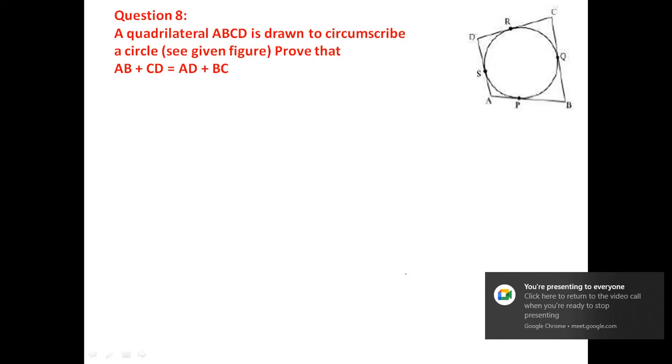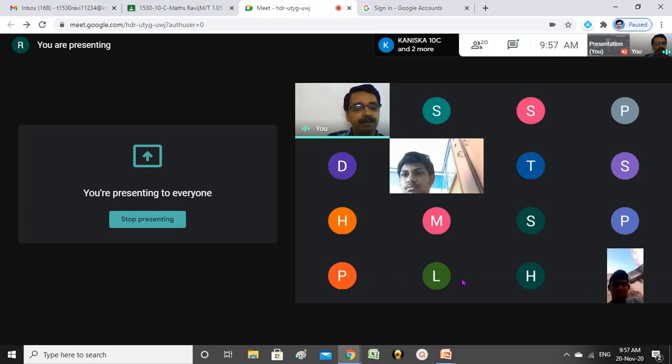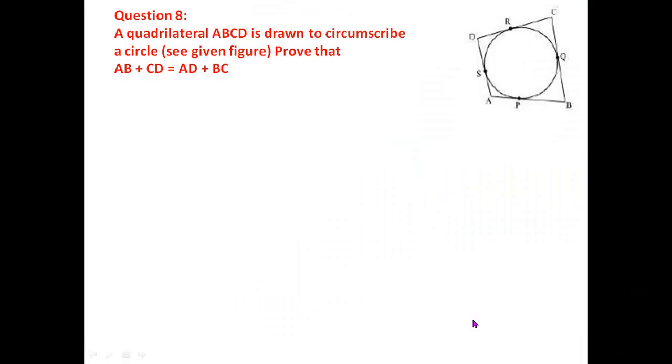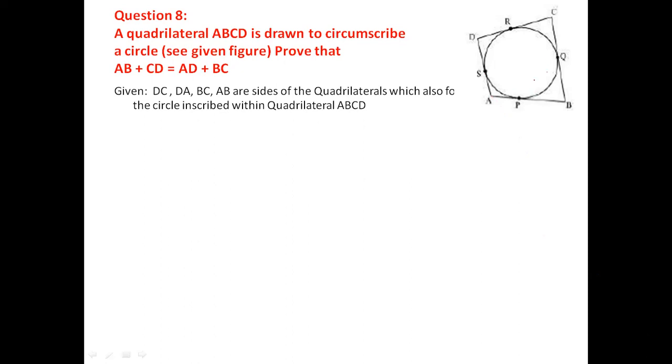Question 8 is very important. A quadrilateral ABCD is drawn to circumscribe a circle. Prove that AB + CD = AD + BC. Given that DA, DC, CB, and AB are the sides of the quadrilateral, which also form tangents to the inscribed circle. Circumscribe means the quadrilateral is outside the circle; the circle is inscribed in the quadrilateral.